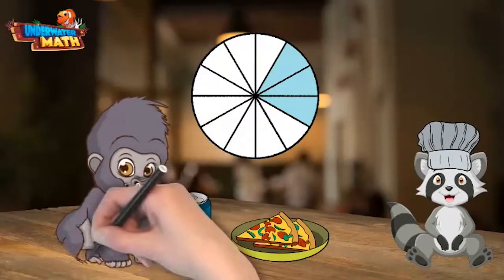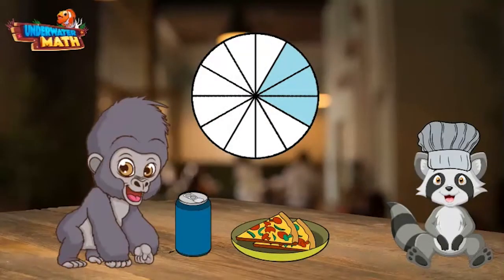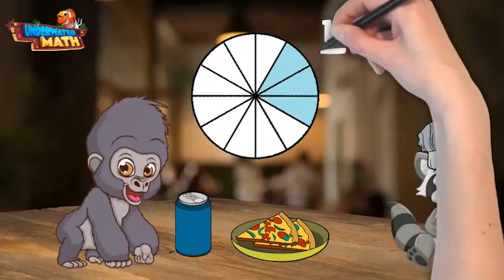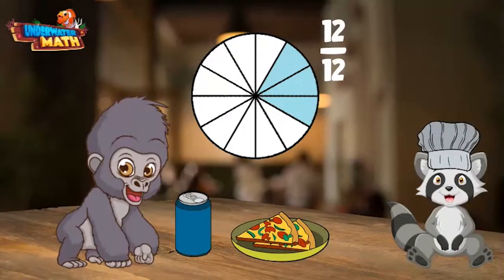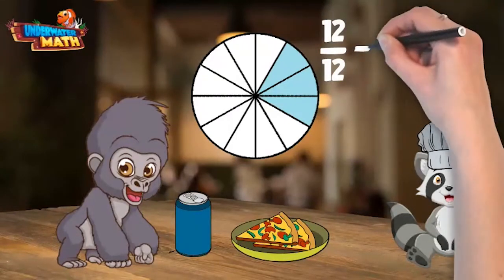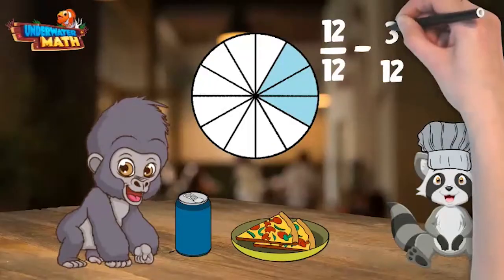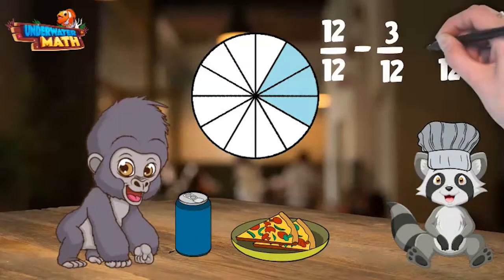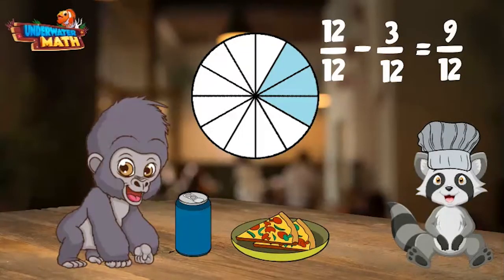Chip ate 3/12ths of the pizza, shown on our model by the shaded blue parts. How much pizza was left? We started with 12 out of 12 pieces. Chip ate 3, so we can subtract 3/12ths from the pieces: 12/12 minus 3/12 equals 9/12.